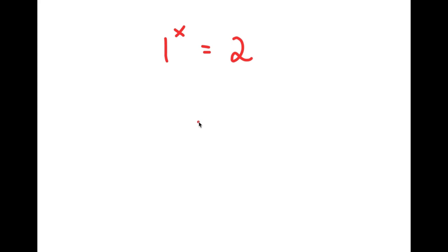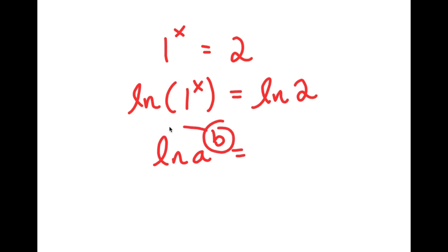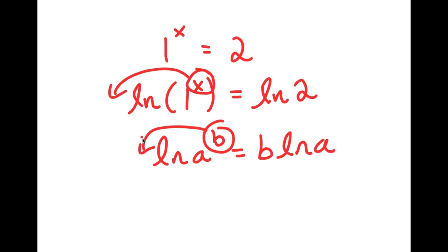In this problem, I have 1 to the power of x is equal to 2. To solve this, I'm going to take the natural log or ln on both sides. So I have ln of 1 to the power of x is equal to ln 2. Now, if I have something in the form ln a to the power of b, I can move this exponent b to the front, so I get b times ln a. In this case, I have ln 1 to the power of x, and I can move x to the front. So I get x times ln 1 is equal to ln 2.